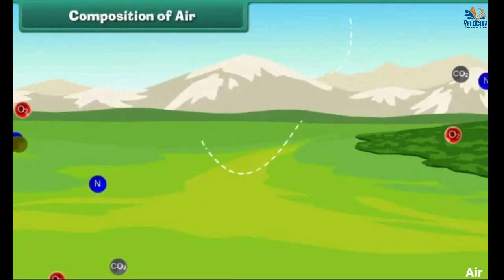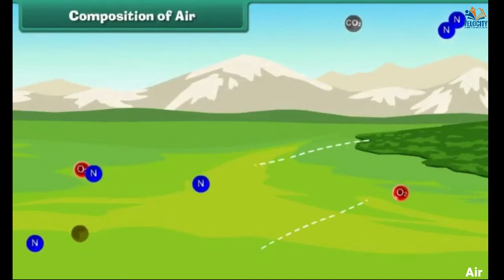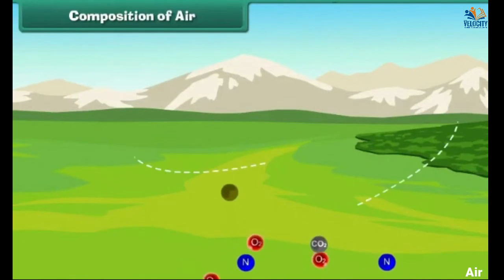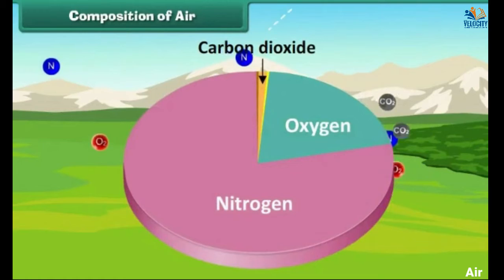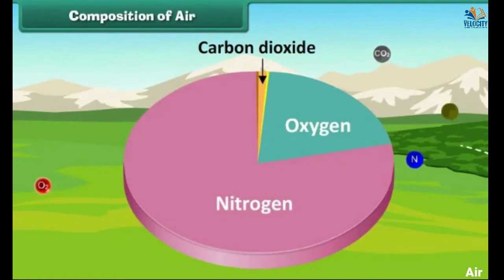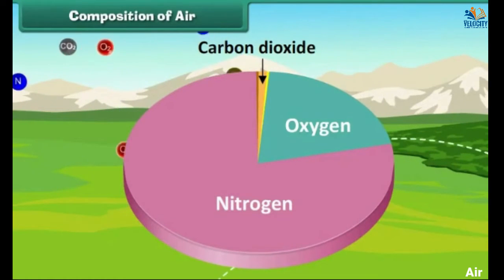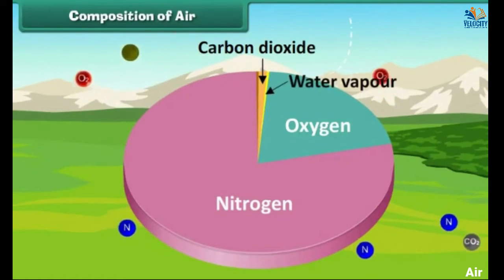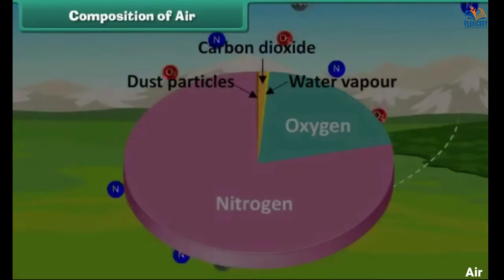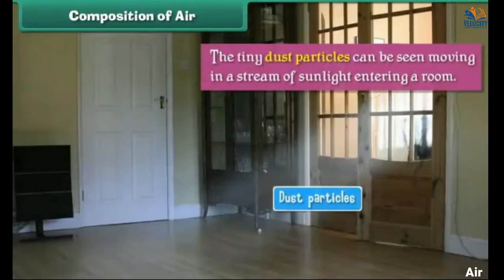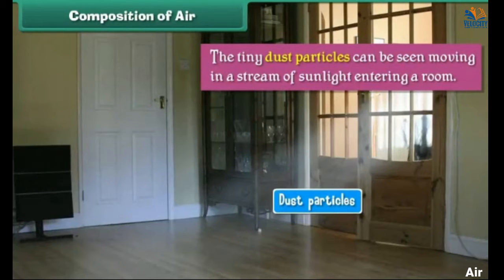Composition of Air: Air is made up of several gases, the most important being nitrogen, oxygen and carbon dioxide. Air also contains water vapour and dust particles. The tiny dust particles can be seen moving in a stream of sunlight entering a room.